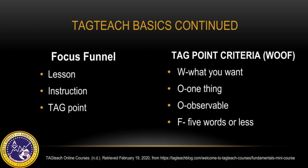WOOF explains the tag point in detail. What makes up a tag point? W: what you want — keep it positive. O: one thing, one step, or behavior at a time. O: observable — clear targets; learners and teachers should be able to identify the behavior. F: five words or less — helps the learner remain on task and focus on what they are exactly doing.